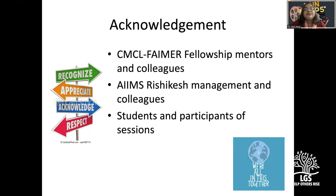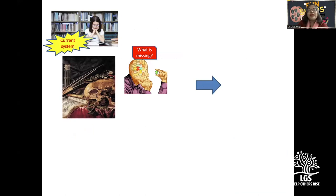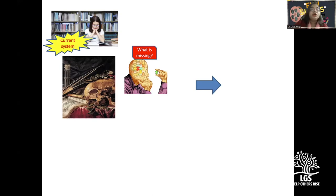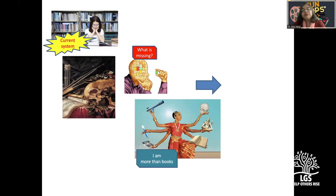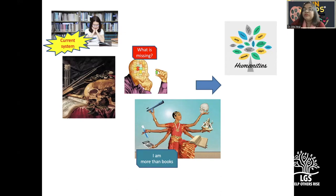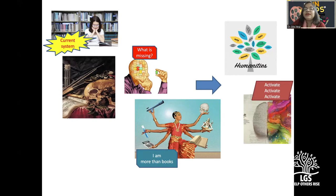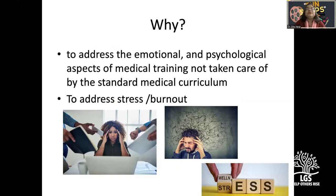In the current medical education system, something is missing. We may have MD, MS, or higher degrees, working in top institutions, and still find something lacking. I found a beautiful image of a doctor saying 'I am more than books.' The answer was humanities — coupled with medicine, it becomes medical humanities. The key is to activate the right side of the brain, differently for different people. We've been focusing only on bookish intelligence, which is only one type.